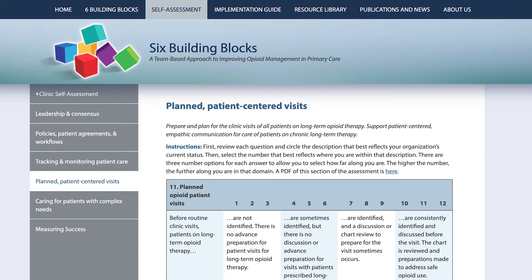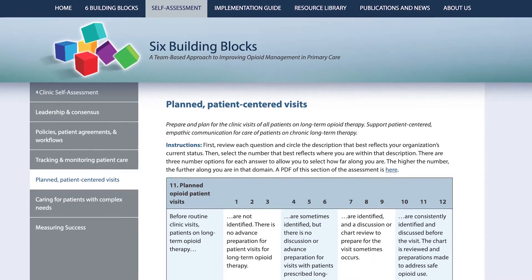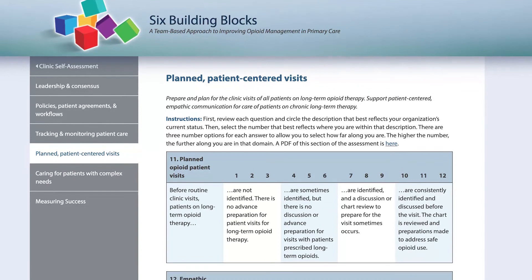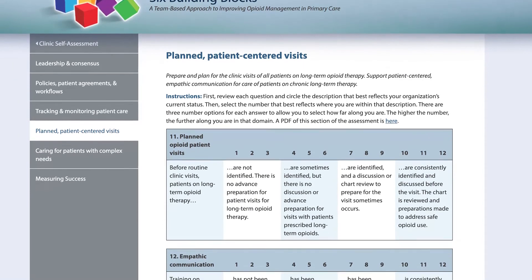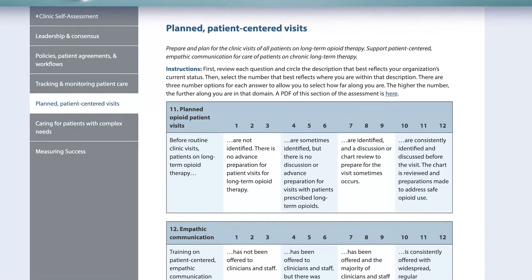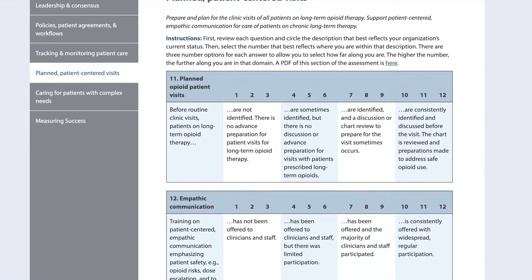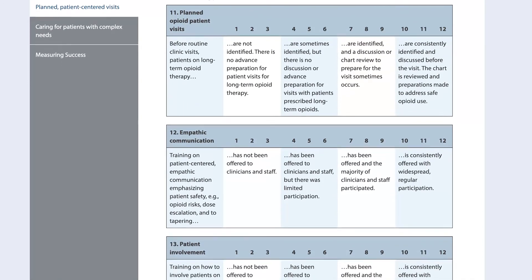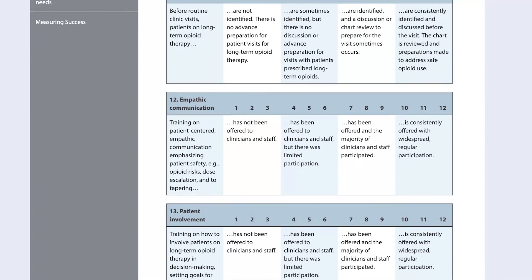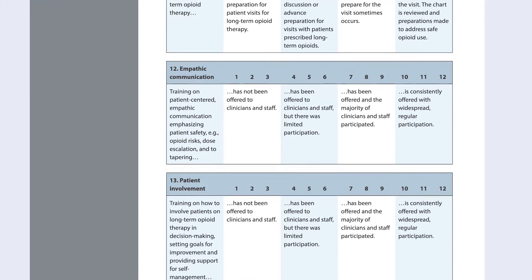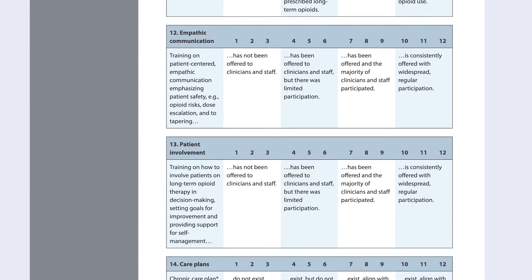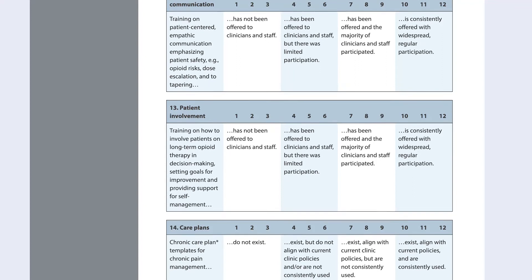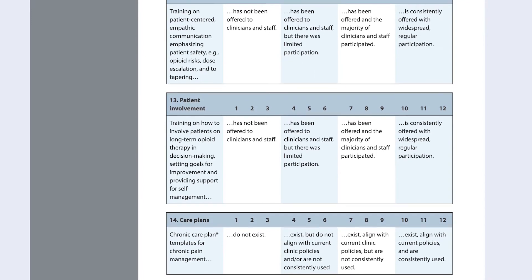For each building block, there's a series of questions, and there are four answer options for each question. Up above, you'll see 12 numbers going across the top, which allows you to rate within each of those four answer options. Sometimes clinics will say, 'We're basically there, not all the way to the next one, but we're doing pretty well, so I want to give us a nine.' That's why those numbers are there.